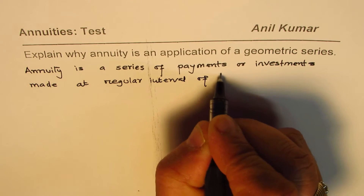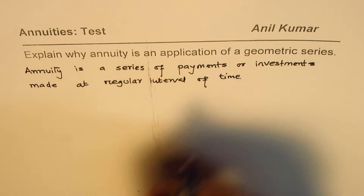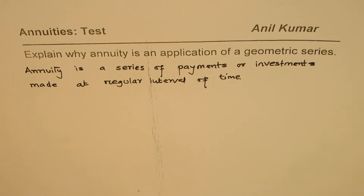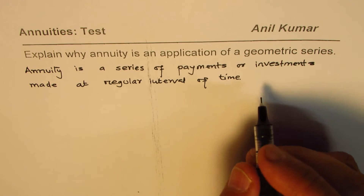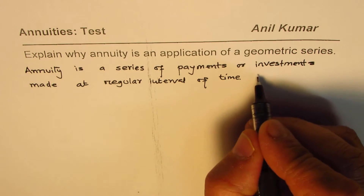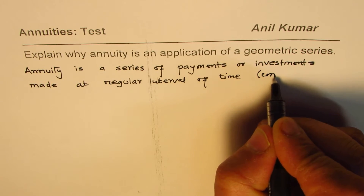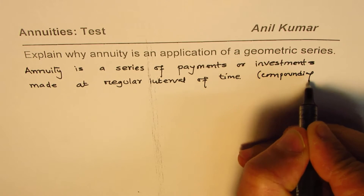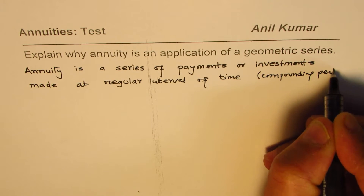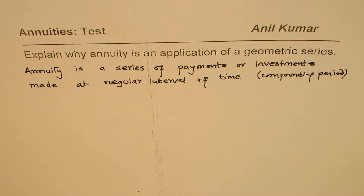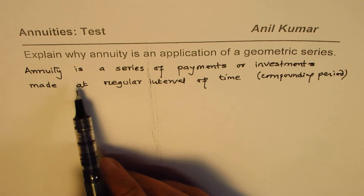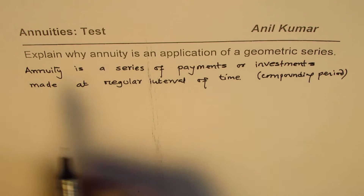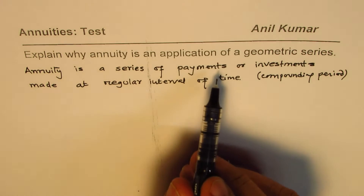Normally in the case of an annuity, this regular interval coincides with the compounding period. That is the case of simple annuities and ordinary annuities. We'll discuss with respect to that how annuities can be treated as a geometric series.